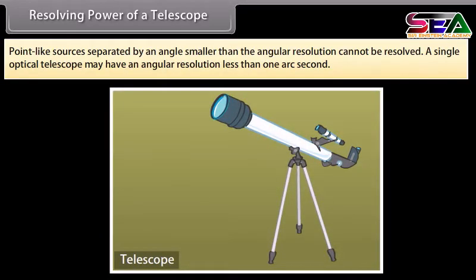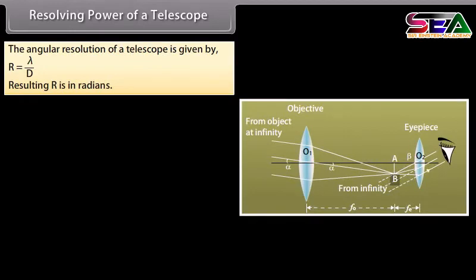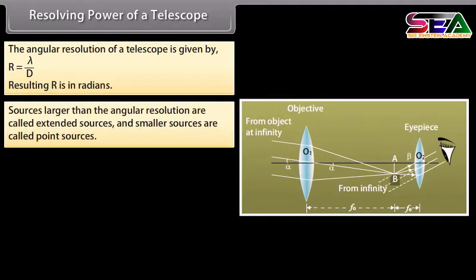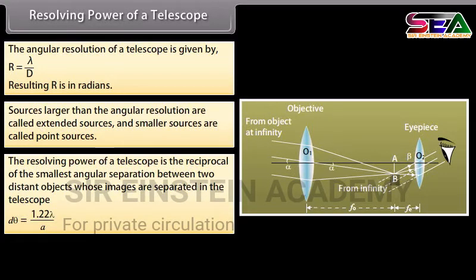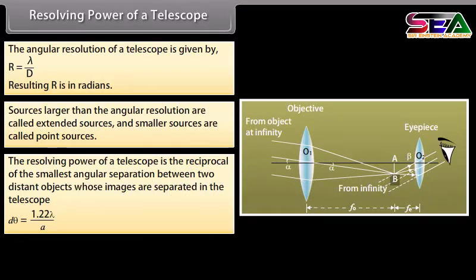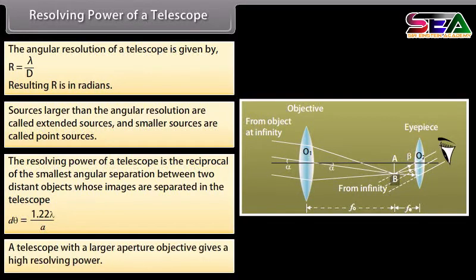Resolving power of a telescope. Point-like sources separated by an angle smaller than the angular resolution cannot be resolved. A single optical telescope may have an angular resolution less than one arc second. The angular resolution of a telescope is given by R equals lambda divided by D, where lambda is the wavelength of the observed radiation and D is the diameter of the telescope's objective. Resulting R is in radians. Sources larger than the angular resolution are called extended sources and smaller sources are called point sources. The resolving power of a telescope is the reciprocal of the smallest angular separation between two distant objects whose images are separated in the telescope. d theta equals 1.22 lambda divided by A. A telescope with a larger aperture objective gives a high resolving power.